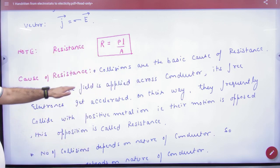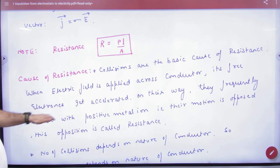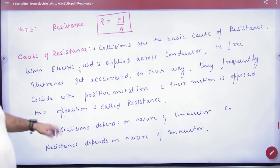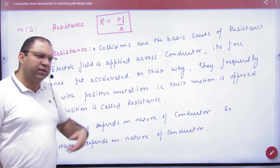When an electric field is applied across the conductor, its free electrons get accelerated. On their way, they frequently collide with positive metal ions and get stuck.